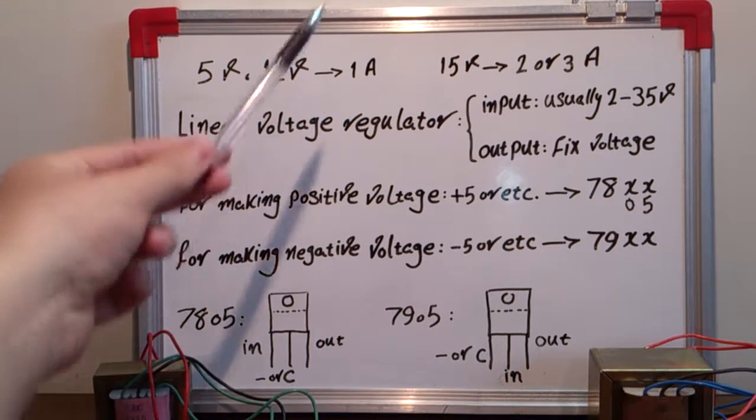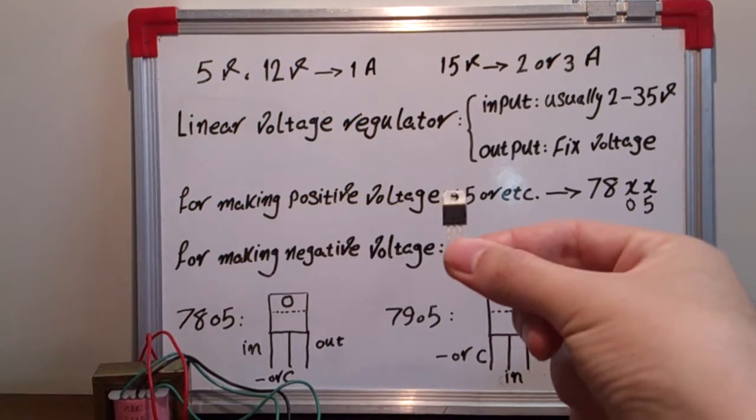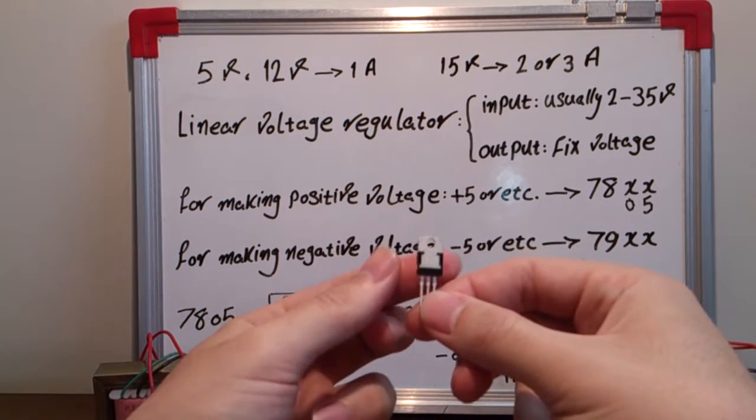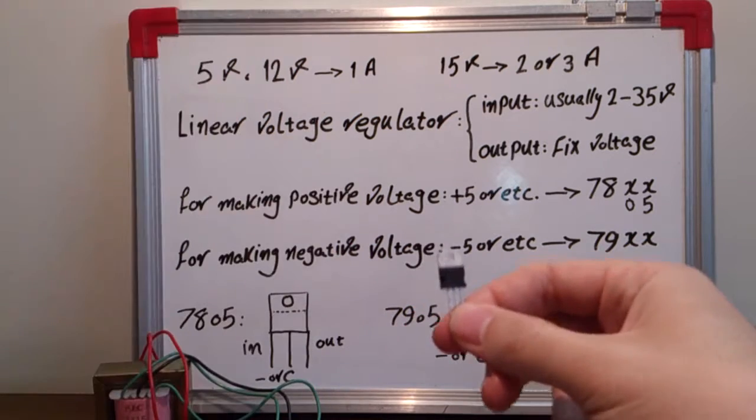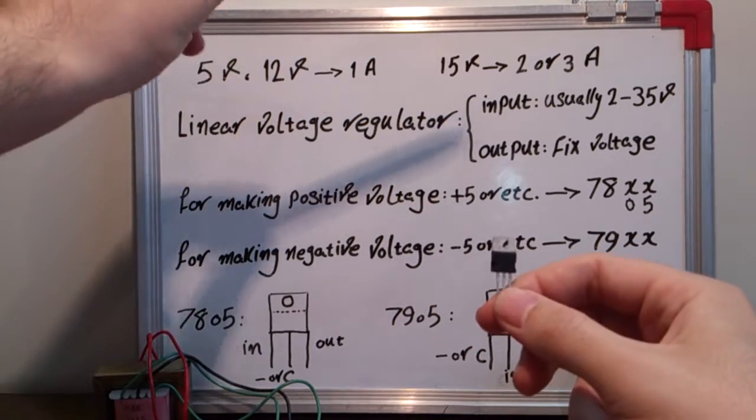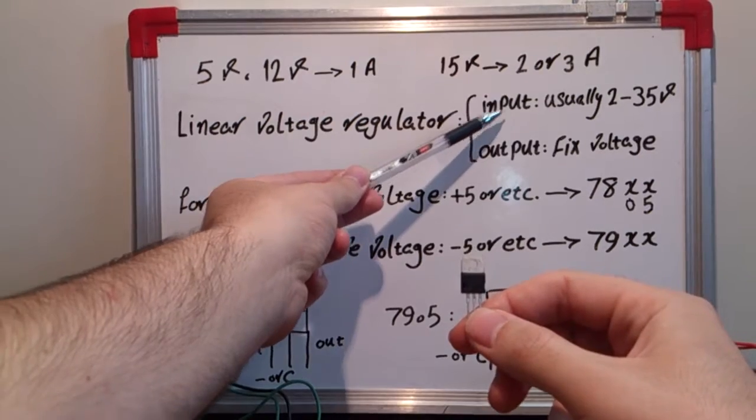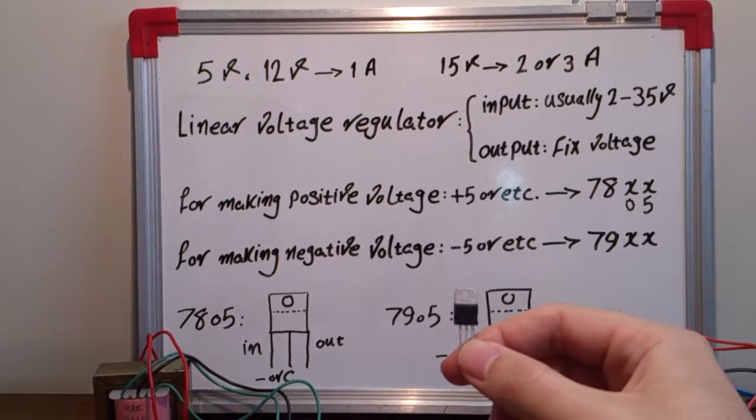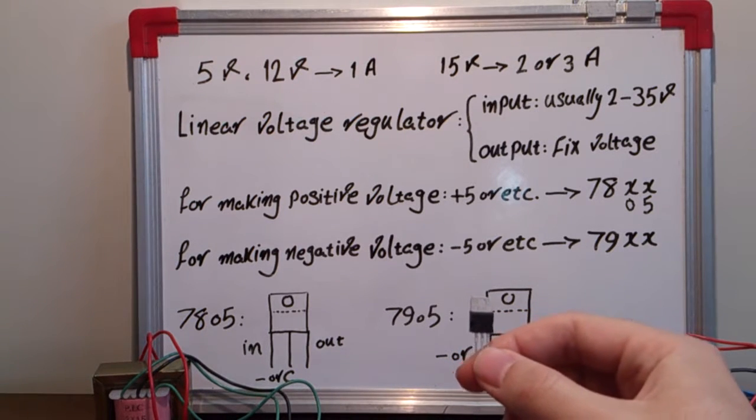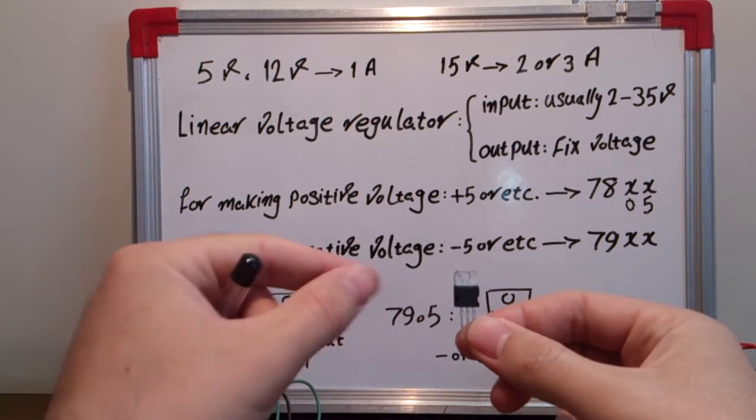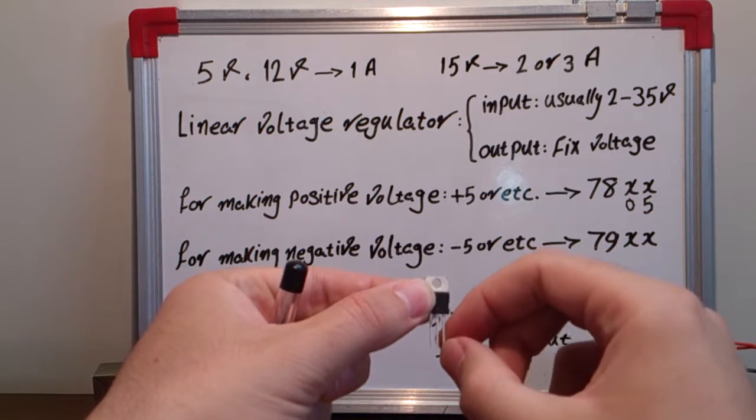For this purpose, we need to use a linear voltage regulator. A linear voltage regulator is a three-pin electrical piece. It works like this: if we supply this regulator input with usually 2 to 35 volts, the output of this regulator is always a fixed voltage. Like, if it's a 5-volt regulator and I supply this with 9 volts, the output of this regulator is fixed at 5 volts.